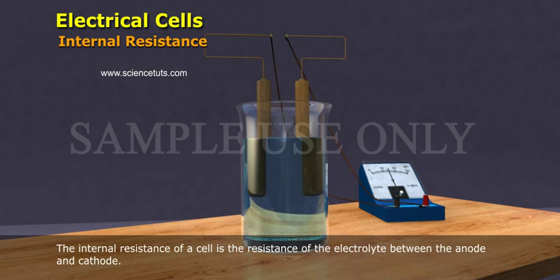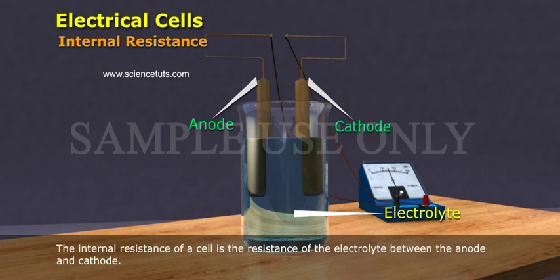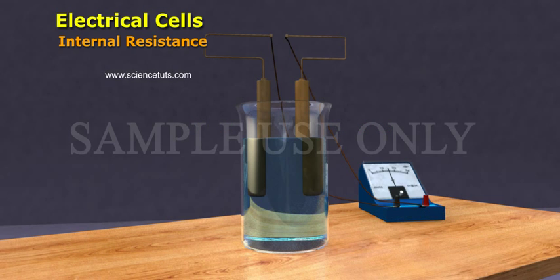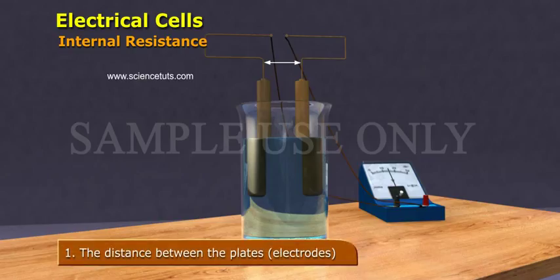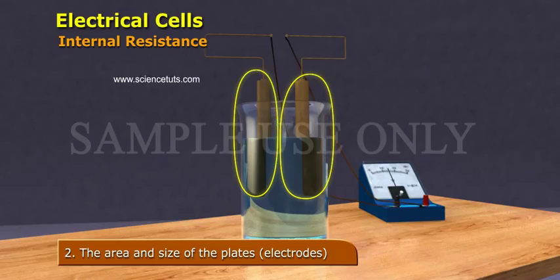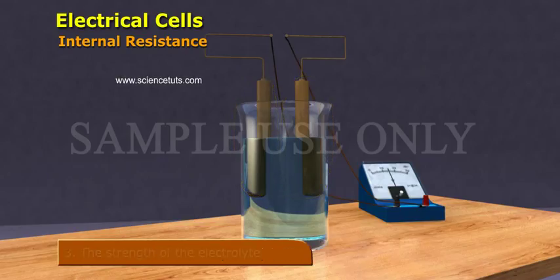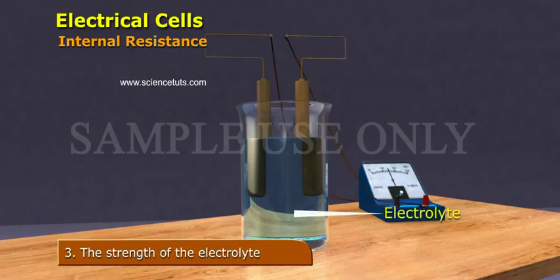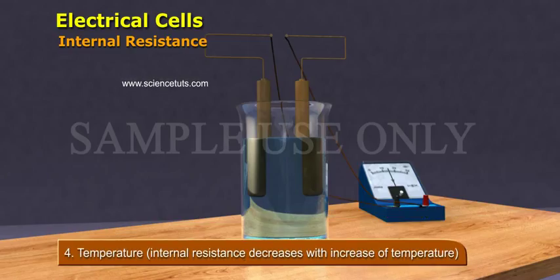Internal resistance. The internal resistance of a cell is the resistance of the electrolyte between the anode and cathode. It depends on: one, the distance between the plates or electrodes; two, the area and size of the plates or electrodes; three, the strength of the electrolyte; four, temperature.